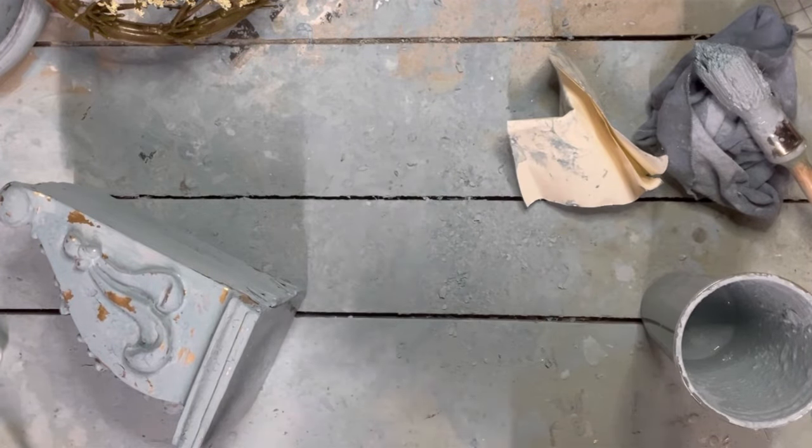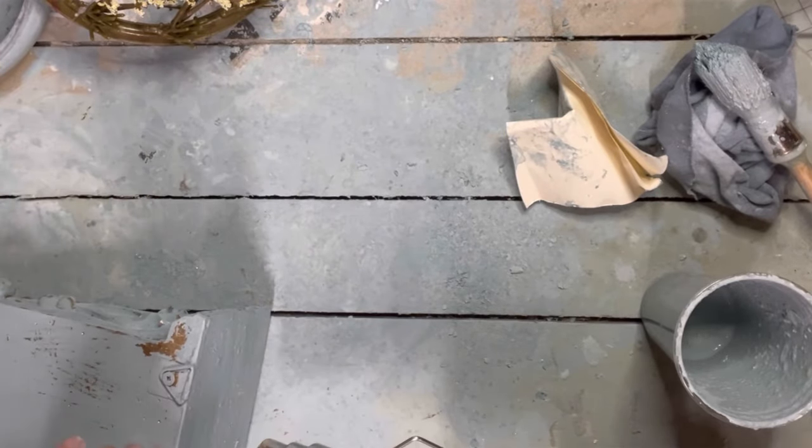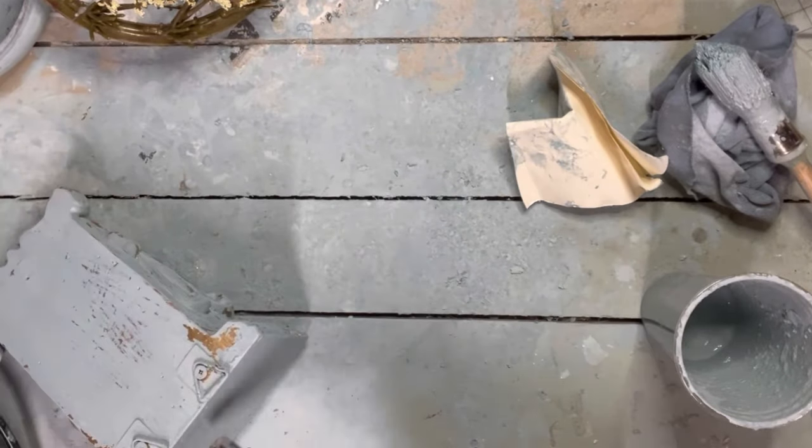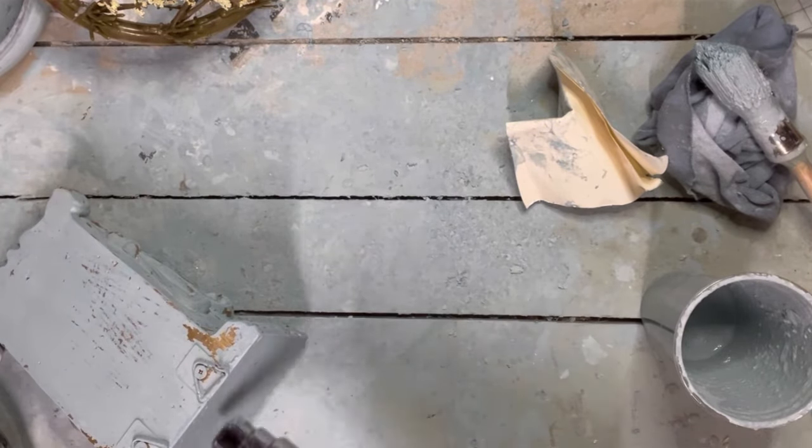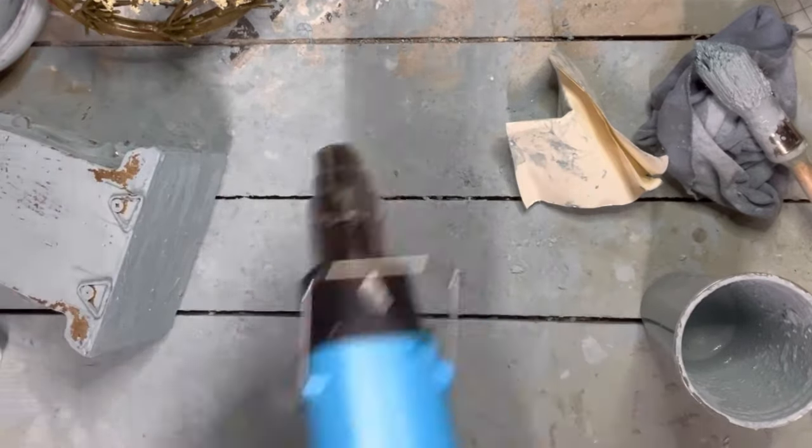It still gave me a chippy surface here but it wasn't so much chippy like the first one where almost all the paint was coming off and that's not the look that I wanted. So once again come back in with your heat gun, reactivate that chippiness.